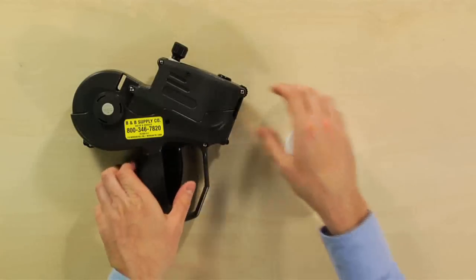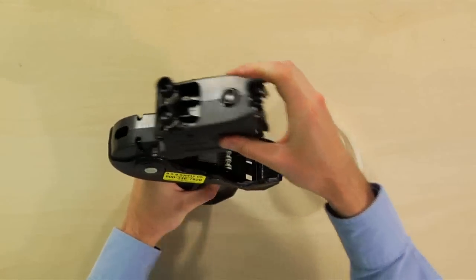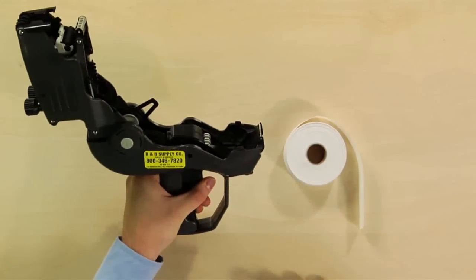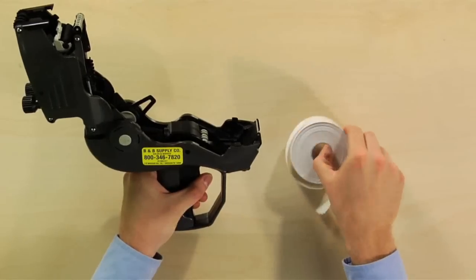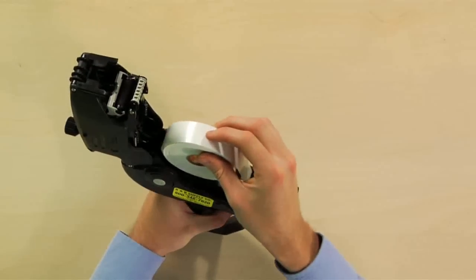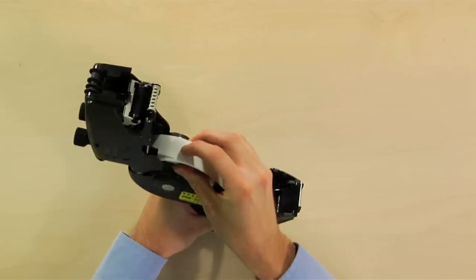Next, take hold of and open your Monarch 1152 price gun. Make sure the labels are coming off the top of the roll and click the label roll into place in between the two light gray roll holders.